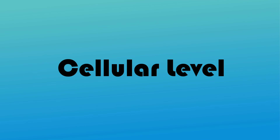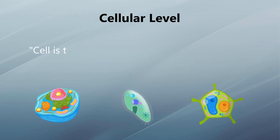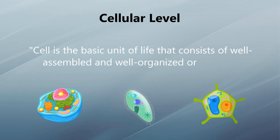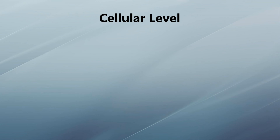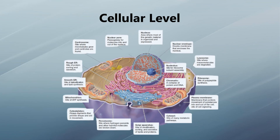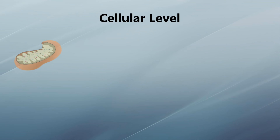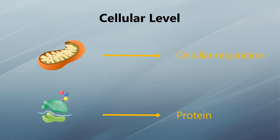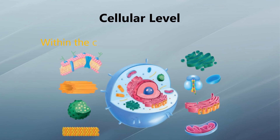At the cellular level, a cell is the basic unit of life that consists of well-assembled and well-organized organelles. Each type of organelle is specialized to perform a specific function. For example, mitochondria are specialized for cellular respiration, and ribosomes are specialized for protein synthesis. Thus, within the cell there is a division of labor.